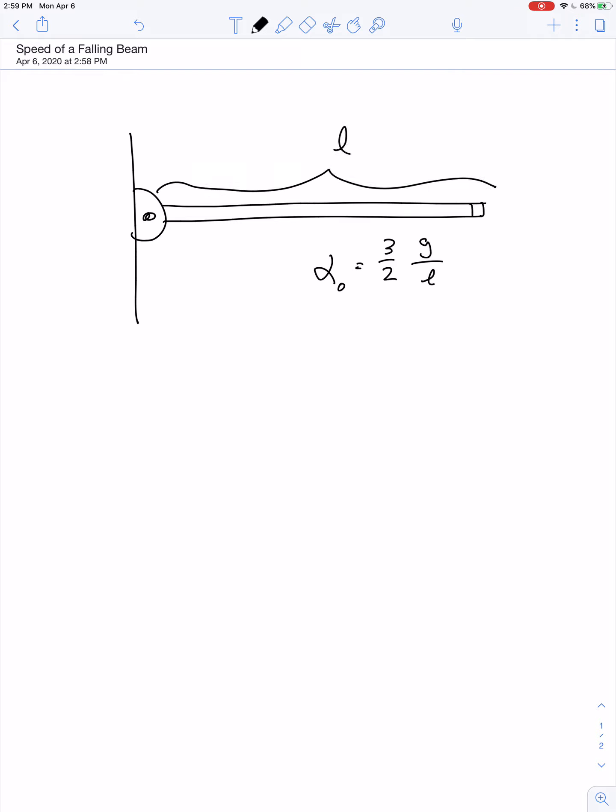That means the tip of the beam has an initial tangential acceleration equal to 3 halves of g, whereas a point on the beam that sits at a distance of 2 thirds of the length has an initial tangential acceleration just equal to g.